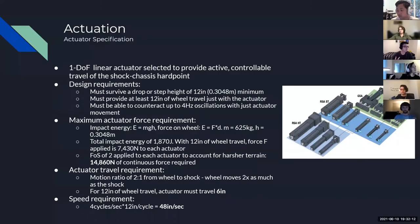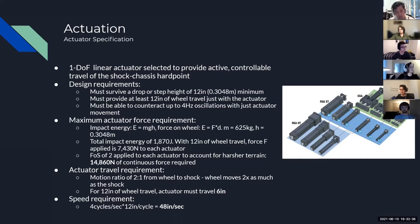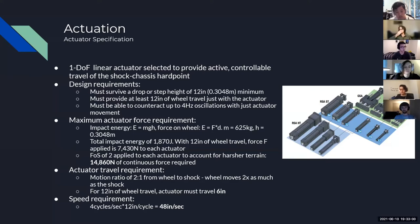For our actuator specification, we wanted a one-degree-of-freedom linear actuator placed in series with our shock system to give the full range of motion as efficiently as possible. To meet our design requirements for minimum step height, wheel travel, and oscillation, we used the work-energy theorem to calculate impact force — resulting in approximately 7,430 newtons required per actuator. After applying a safety factor of two for harsher terrain, we established a force requirement of 14,860 newtons of continuous force per actuator.